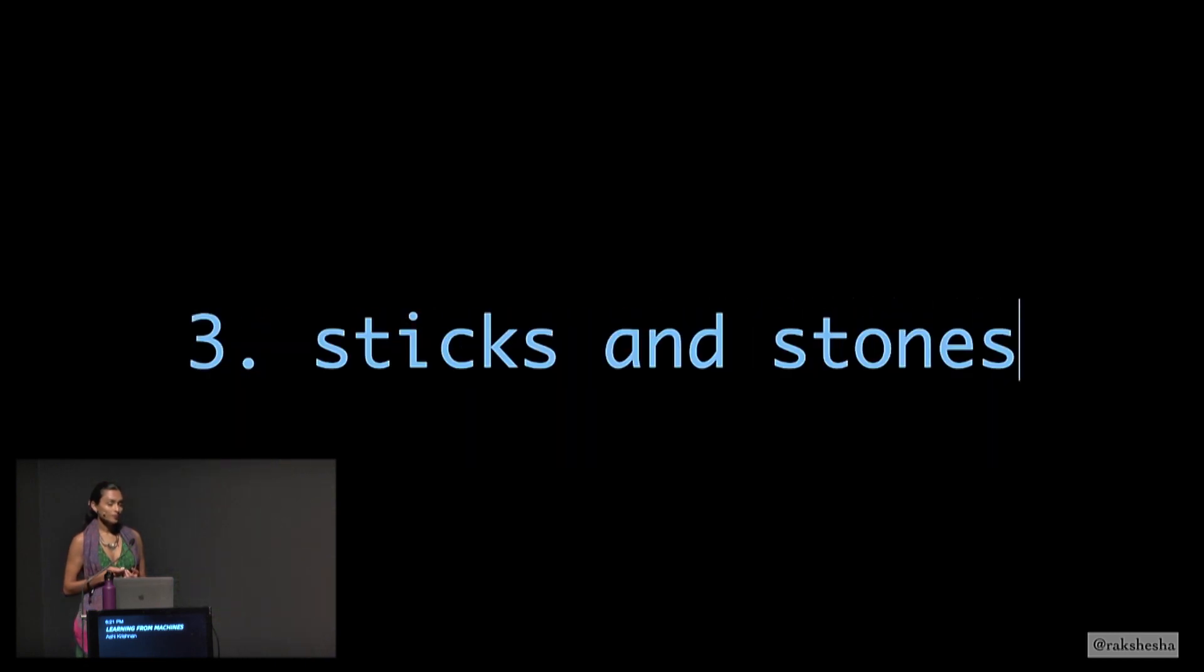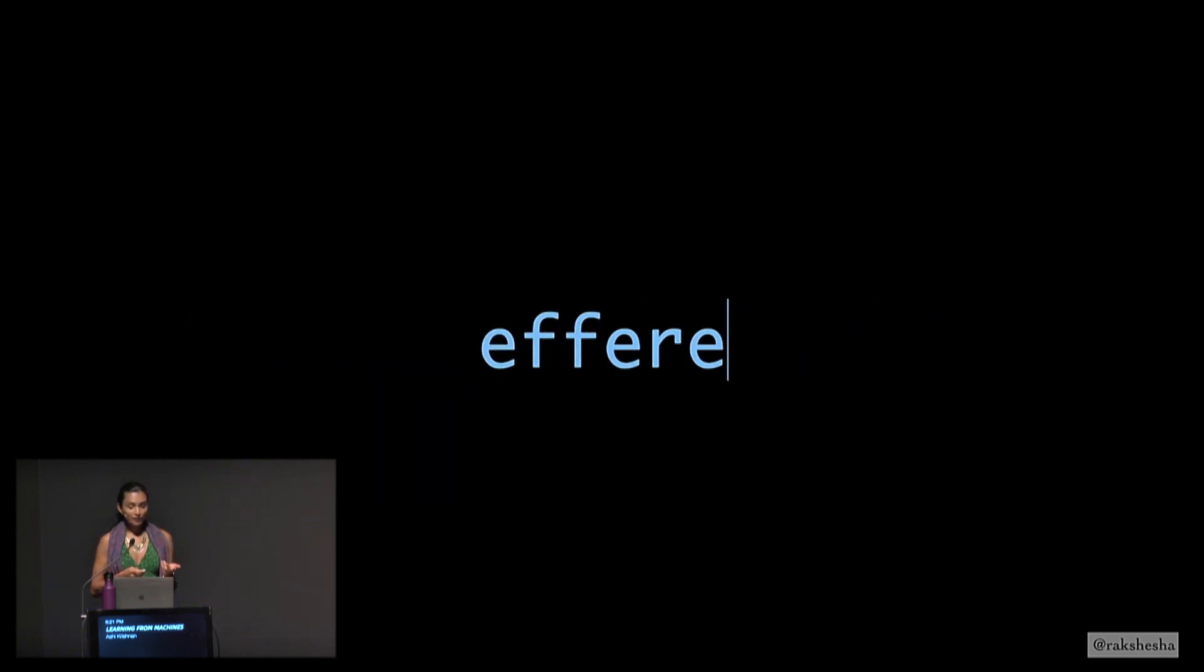Part 3. Sticks and stones. They say you can't tickle yourself, because you know it's coming. Specifically, when your brain sends an action command to your muscles, it's called an efference. When an efference is sent, your brain makes a copy.